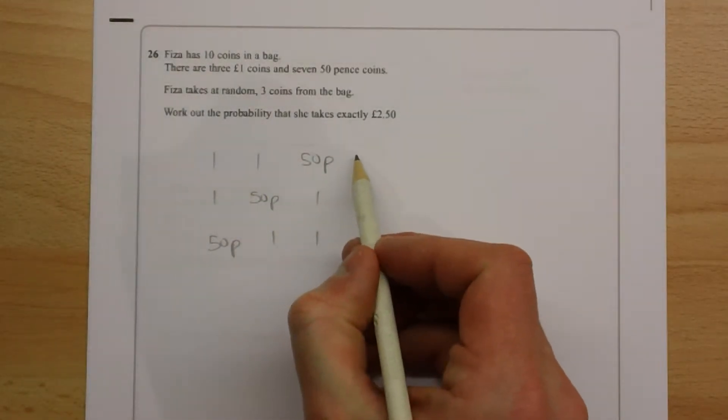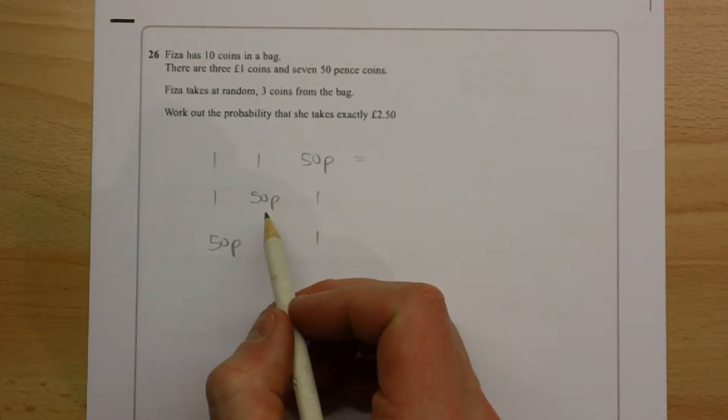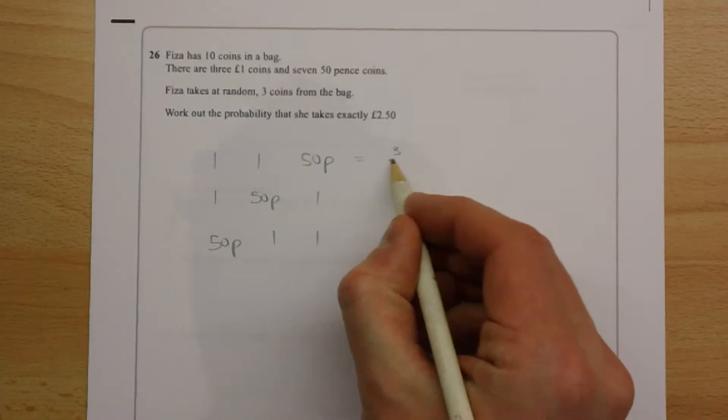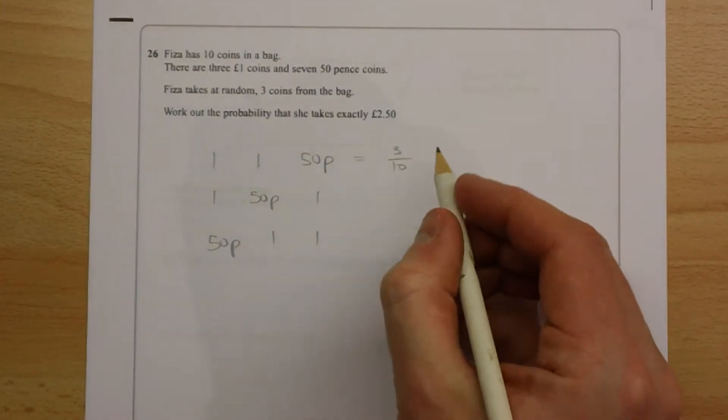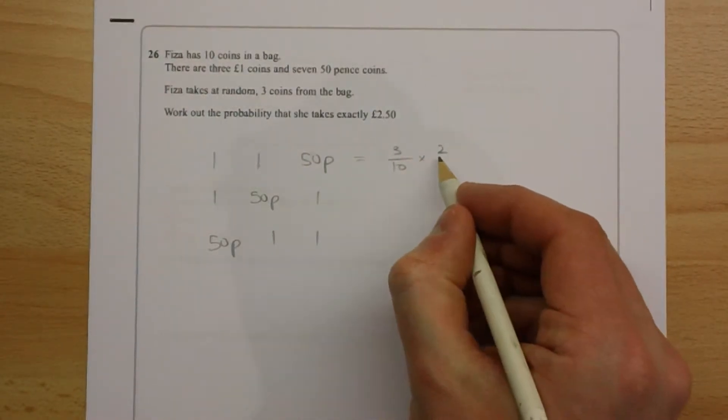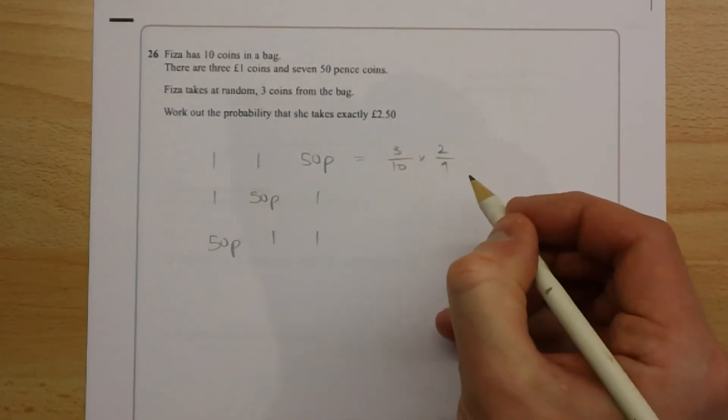OK, let's have a look at this one first of all. The probability of pulling out a pound, a pound and a 50 pence. There are 3 £1 coins, so the probability of picking out a pound coin is 3 out of 10. Then we have to pull out another pound coin, but if we've lost a pound coin, then there's only 2 pound coins left. And if we've taken one coin out, then there's only 9 coins left.